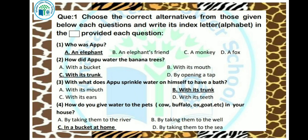Question 4: How do you give water to pets like cow, buffalo, ox, goat, etc. in your house? You take them to the river, or well, or keep water in a bucket at home. So our answer is: in a bucket at home. Question 5: In which season do people use umbrellas and raincoats? In monsoon, the rainy season. The answer is B option.